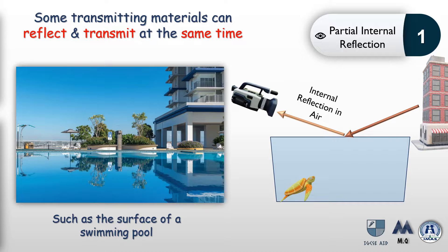At the same time, if there was an observer inside the pool, such as a turtle, it would also be able to see the building, because part of the ray is refracted towards the turtle's eye. We can say parts of the incident ray were reflected and other parts were refracted — perhaps 50% reflection and 50% refraction. This is called partial internal reflection, because not all the light is reflected.